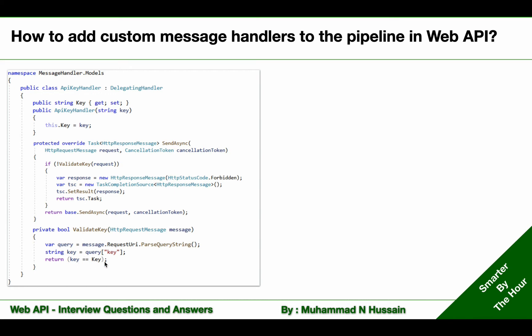If that validation passes, we skip everything and call base.SendAsync. This base.SendAsync method will normally call the next available message handler in the pipeline. But if validation fails, we create an HTTP response message with a forbidden status and return that response from this method — breaking the chain instead of calling the next message handlers in the pipeline.